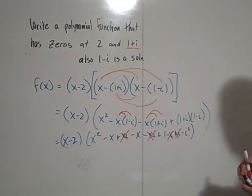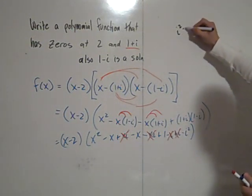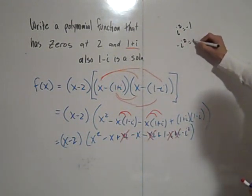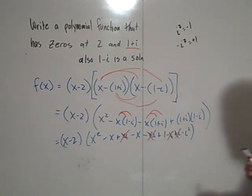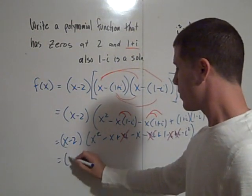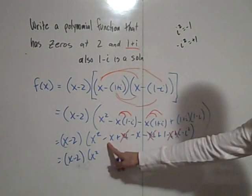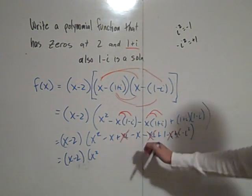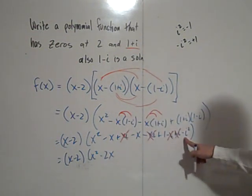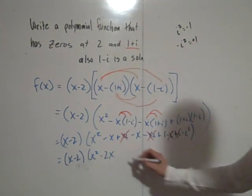And then this negative i squared, remember that i squared equals negative 1. So a negative i squared is equal to positive 1. So we can write this a little bit more simply, yet we have x minus 2, and then we have x squared. How many x's do we have? We have negative 1x, negative 2x's. And then we have this 1 plus 1. We figured that was plus 1. So this plus 2.